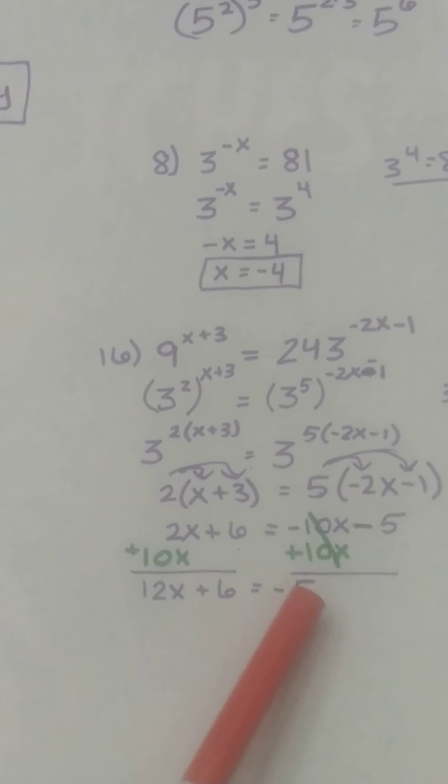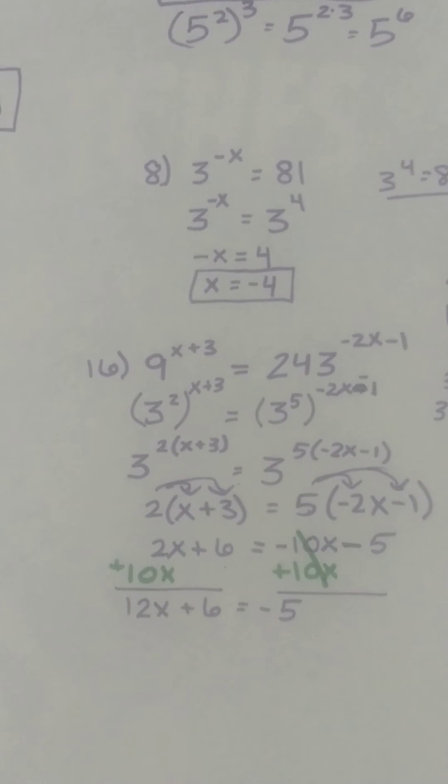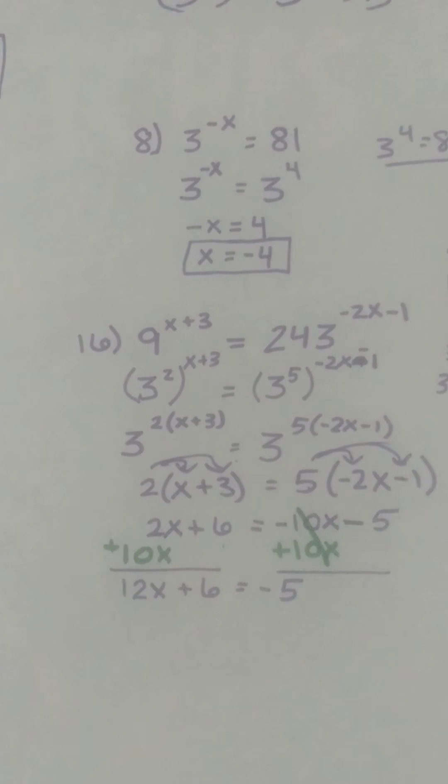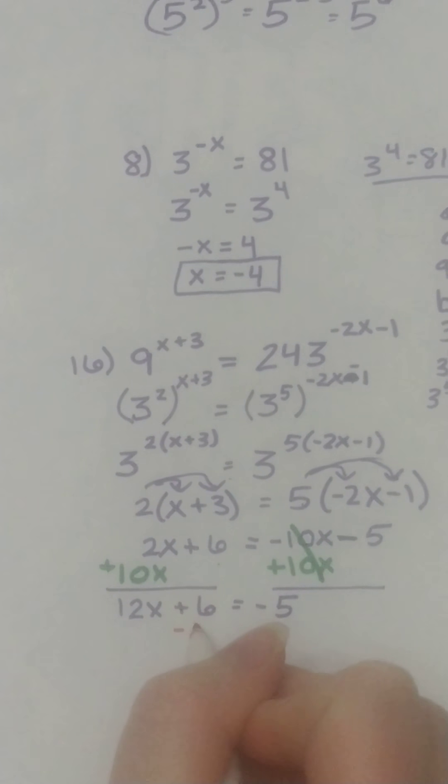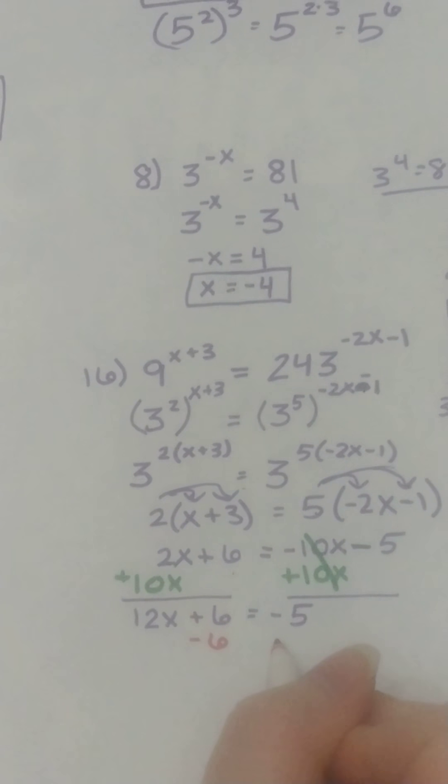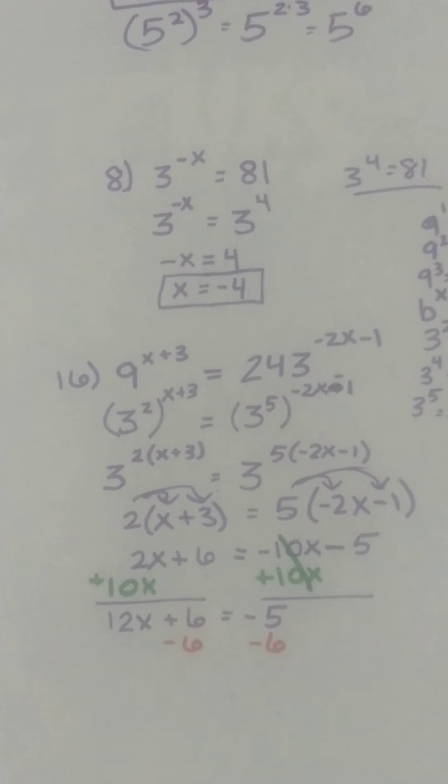Got all our x's here. Now we want to get all our numbers over here. So we got to get rid of the 6. Yes, minus 6. It is plus so we do minus. And same thing on both sides.